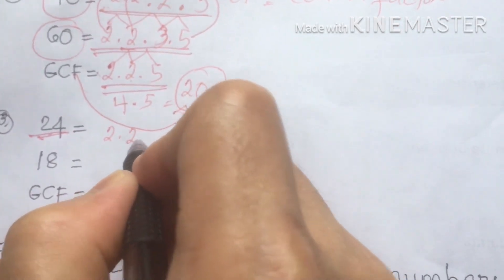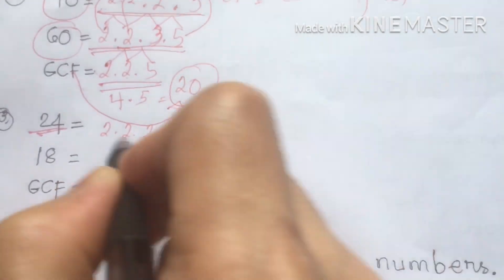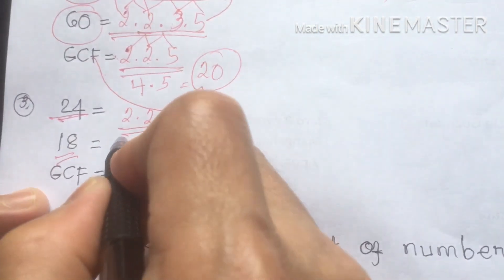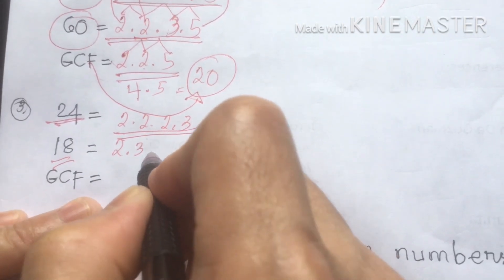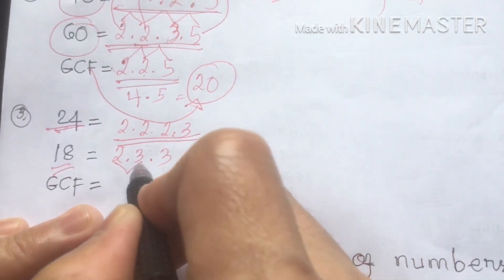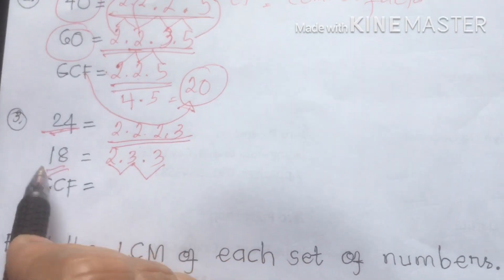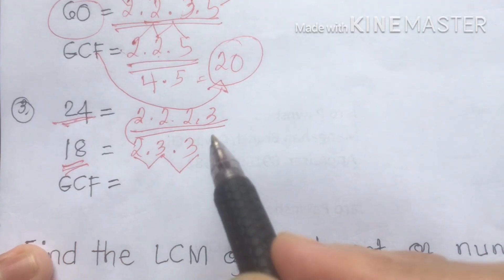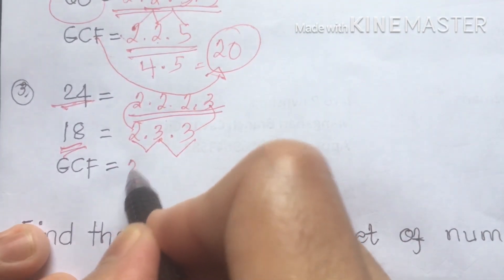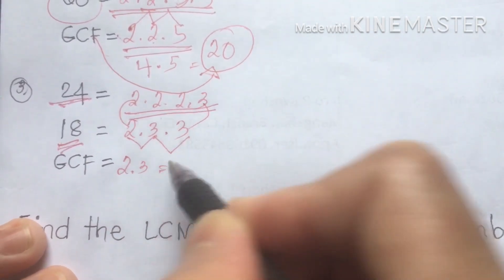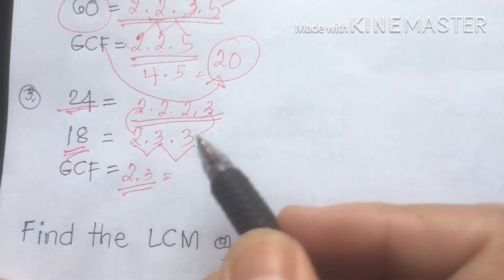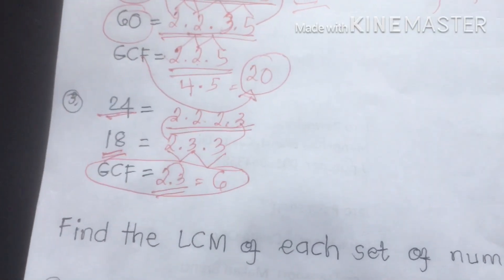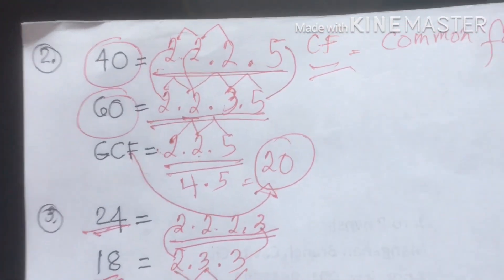For 24 and 810: factor of 24 is 2 × 2 × 2 × 3. Factor of 810 is 2 × 3 × 3 × ... The common factors are 2 and 3. Multiply the common factors: 2 × 3 = 6. Six is our GCF for this problem. Did you understand how to find the Greatest Common Factor?